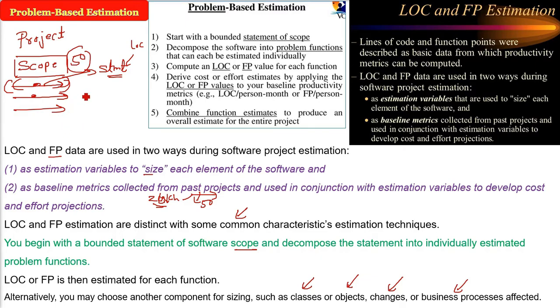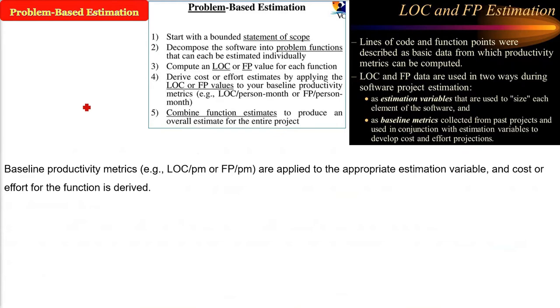First, scope is important. The baseline productivity matrix, for example line of code per person month and function points per person month, these are applied to the appropriate estimation variable now.